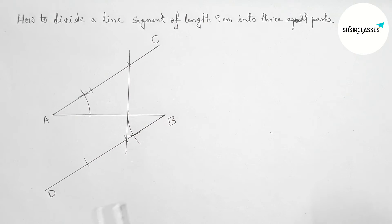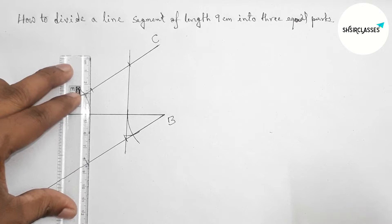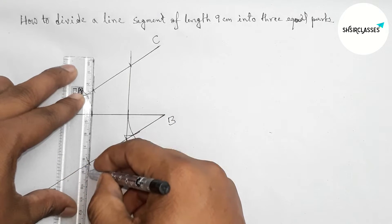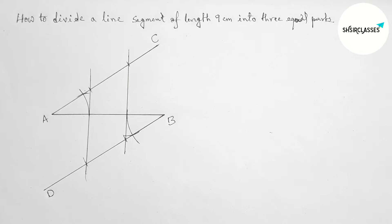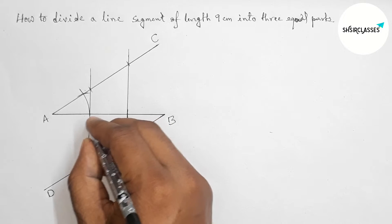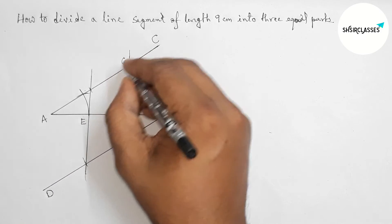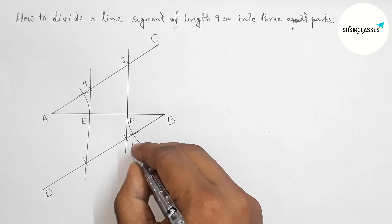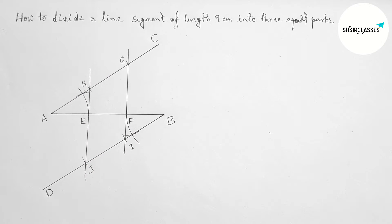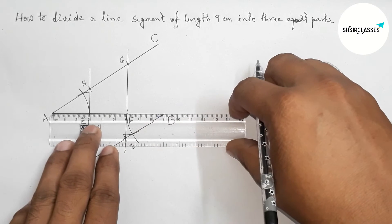Next, first joining these two points, then similarly joining these two points, so here these two lines meet here at a point E and here F, and taking here G, H, I, J. Okay, so now I am going to check whether it is perfect or not.